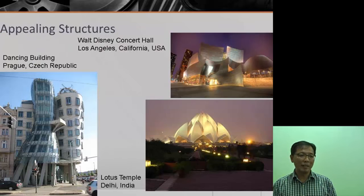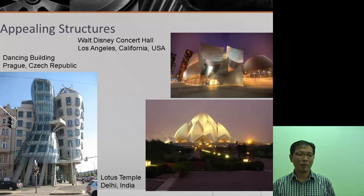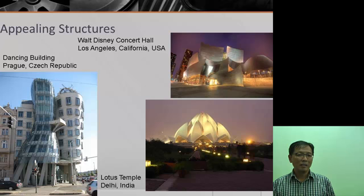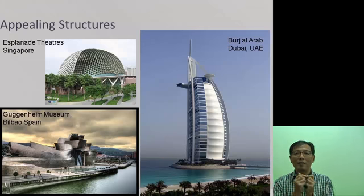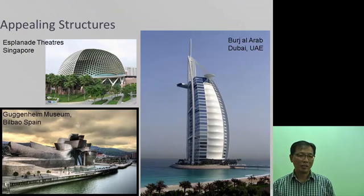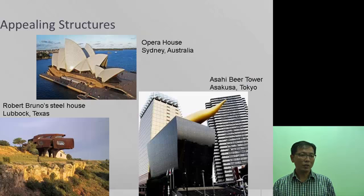Some real-world structures can be made of shell or frame. For example, the Eiffel Tower is made of many tiny frames joined together to form a shell-like appearance.